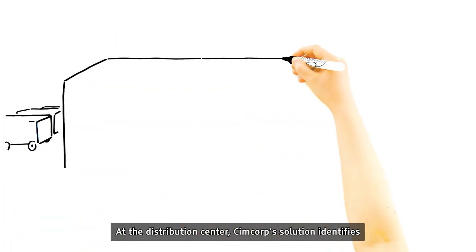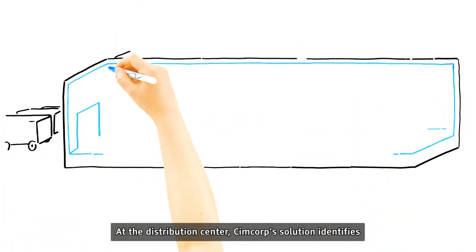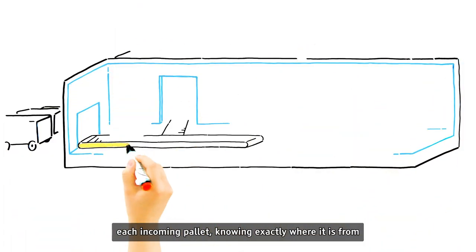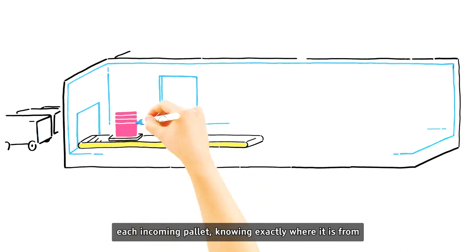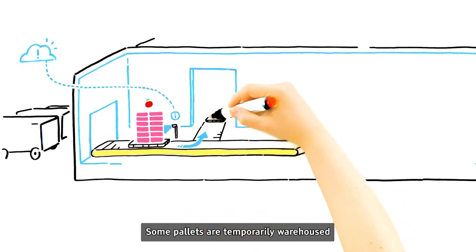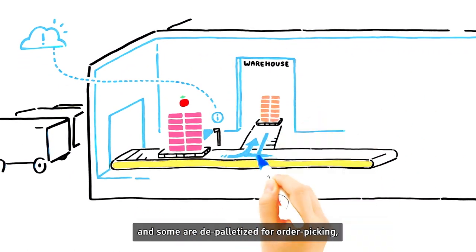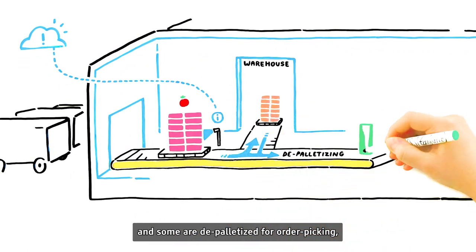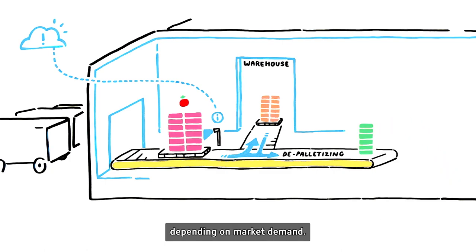At the distribution center, SimCorp's solution identifies each incoming pallet, knowing exactly where it's from and what it contains. Some pallets are temporarily warehoused, and some are depalletized for order picking, depending on market demand.